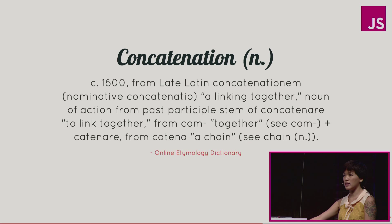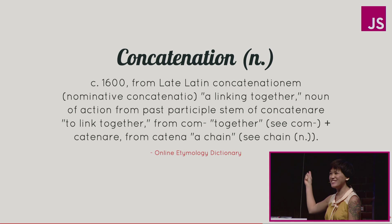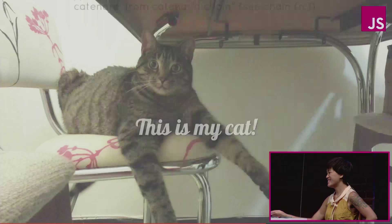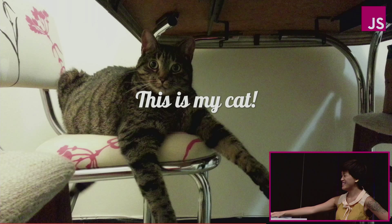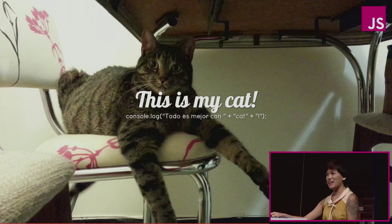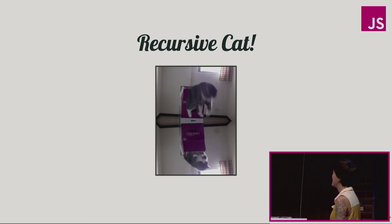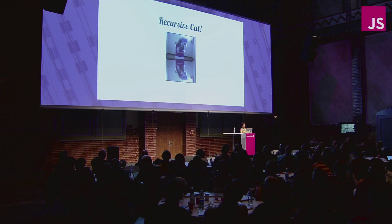Next is concatenation. Concatenation on the online etymology dictionary refers to 'a linking together, to link together a chain.' We actually used that word correctly in computer science — go us. But really the true reason I want to bring up this word is because it's got 'cat' in it. This is my cat. Everything is better concat. And here's a recursive cat — it's stuck in that infinite loop of a function.